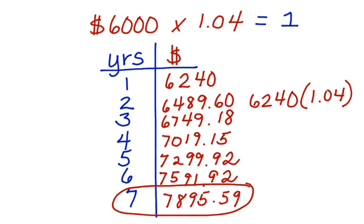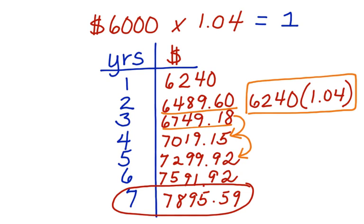Now you'll notice that just like we did this pattern here, each of these numbers was multiplied by 1.04 to get the next value. So each value linked to the next one until we got to our final answer that at seven years, Marco will have earned $7,895.59.